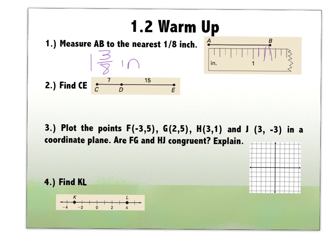Number two says find CE. So this is using our segment addition postulate. If I just add together CD and DE, seven plus 15, I get 22.